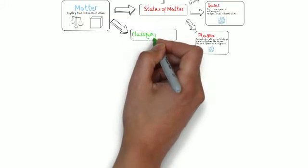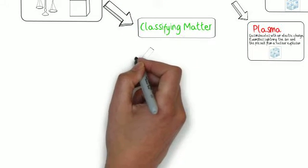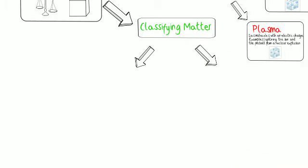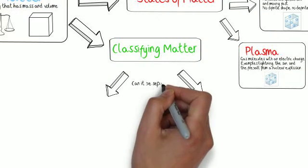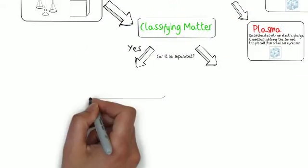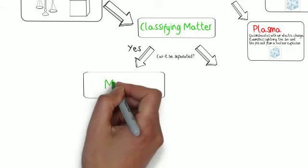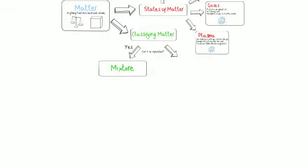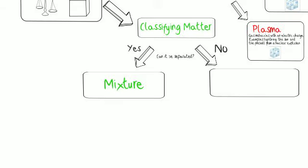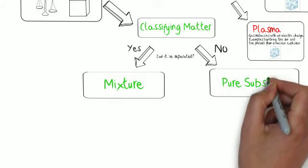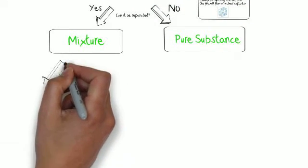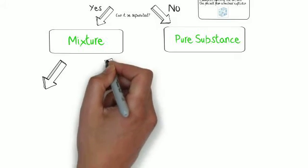Once we have the four states of matter down, we can now start talking about classifying matter into different groups. And in order to do this, we're going to have to ask ourselves a couple of questions. The first question we're going to have to ask ourselves is, can it be separated? And if the answer to that question is yes, then what we have is a mixture. And a mixture is when we have two or more substances that we can physically separate in some way. So, if the answer to the question is no, then we have what is known as a pure substance. You cannot separate pure substances. You can separate mixtures.